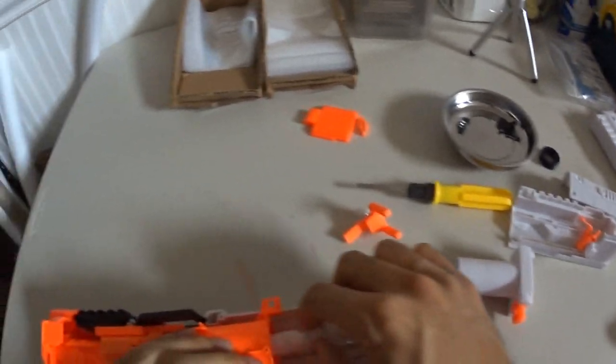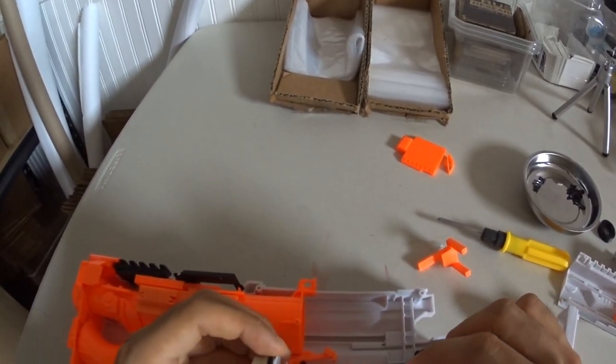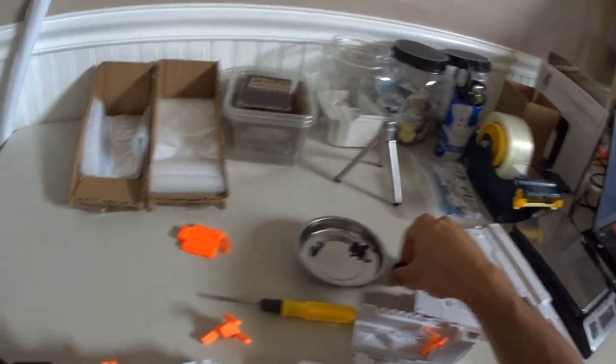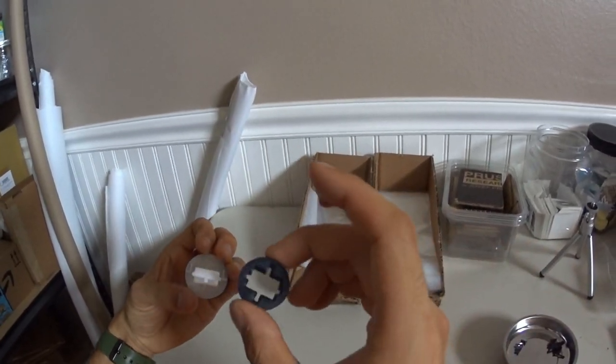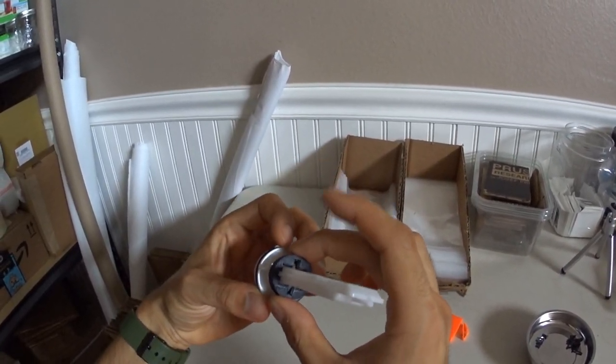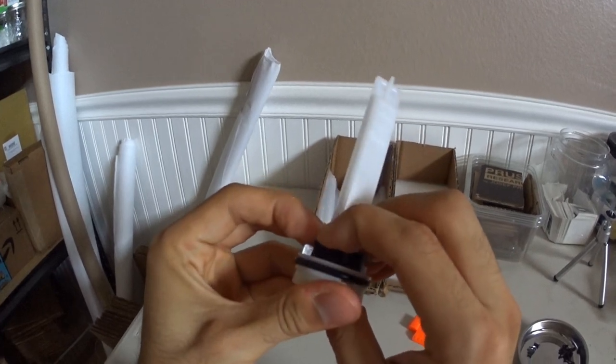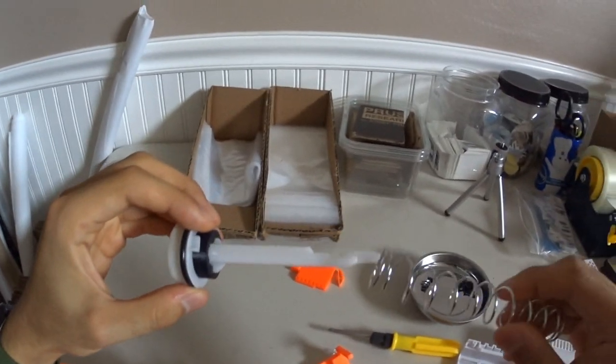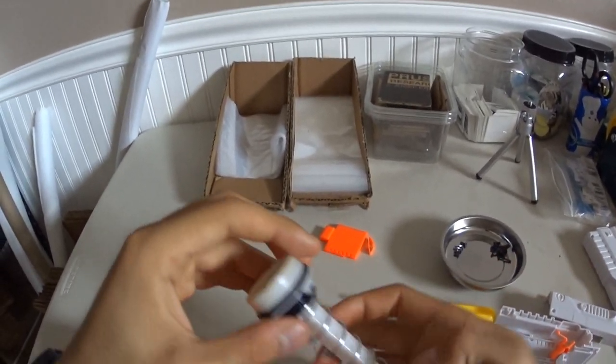Alright, for the spring spacer. Get the plunger. Take off the spring. Now make sure you get this in the right orientation. Just slide on like that. Adds a bit of compression to the spring.